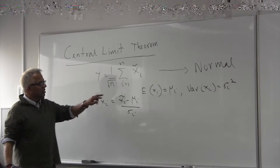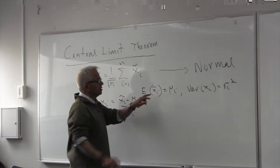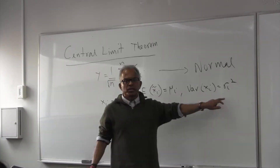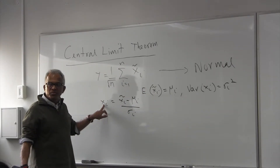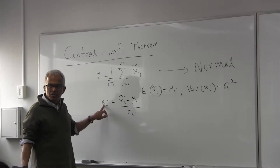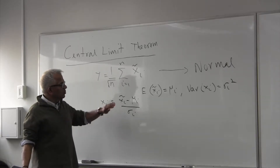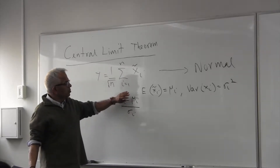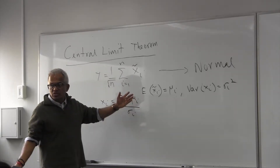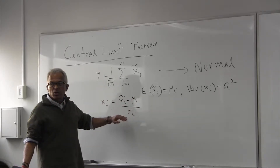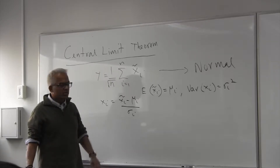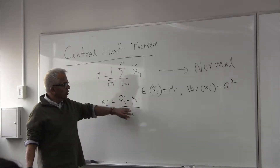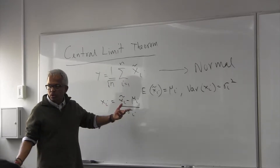These random variables have a given mean and a given variance. So what is the mean of this new random variable? What is the variance? The mean is this mean minus a constant, so that is zero. The variance: if you scale by a constant, the variance is scaled by the square of that constant. So sigma_i squared over sigma_i squared will be one.